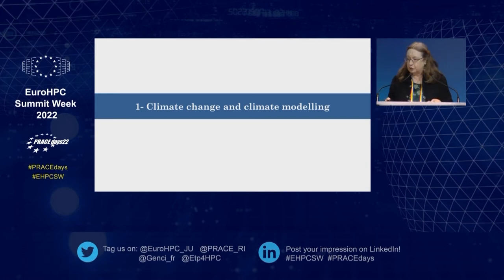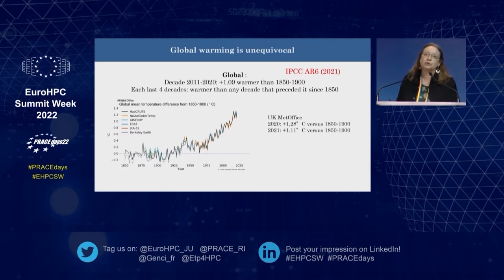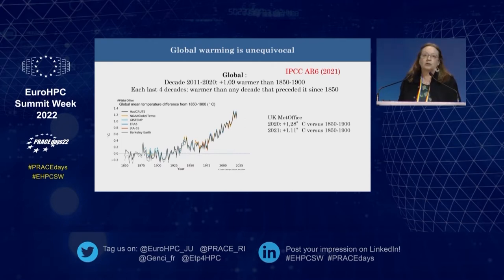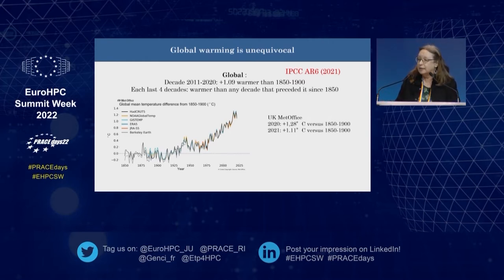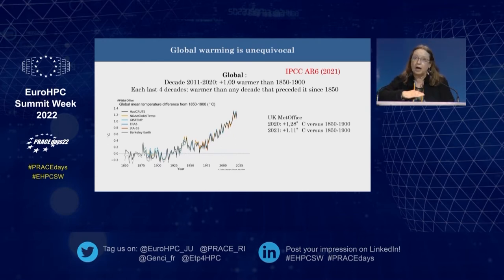I cannot start without showing a key indicator for climate change, which is the global surface air temperature. You see a curve from 1850 until 2021, the latest one, showing a clear trend — a clear increase — with the last decade being about one degree warmer compared to a reference period of 1850 to 1900. That is why you see a zero line: this is the reference.